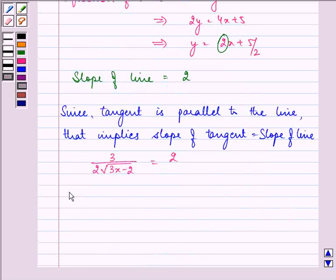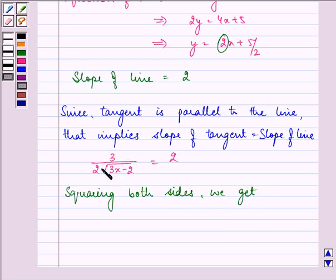On squaring both sides, we get, in order to make this under root sign simplified, we need to square both the sides.